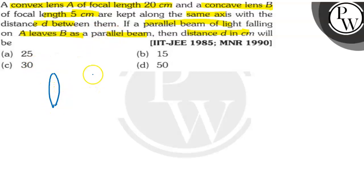This is our convex lens and this is our concave lens. Both are kept on the same axis and the distance between them is D. A parallel beam of light will fall on the convex lens, so what will our distance D be when the parallel beam goes back the same way?